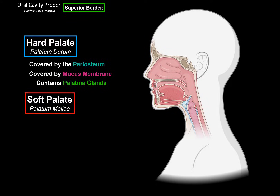Now let's go through the soft palate. The soft palate is this posterior flappy part that doesn't contain any bone. In Latin, the soft palate is sometimes referred to as the velum palatinum, described as the free part on the backside of the palate. When we talk about the velum palatinum, we generally mean the middle part of the soft palate.